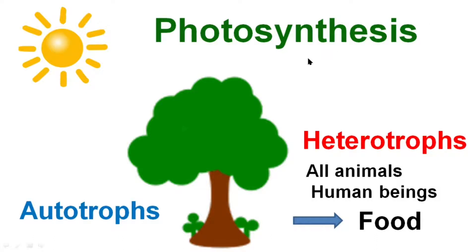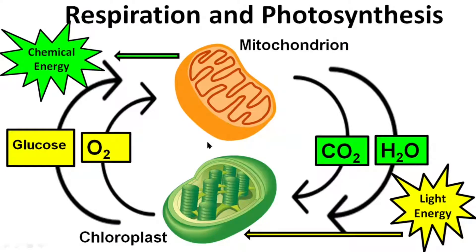Now let's see why plants remain autotrophic. In any plant or animal, when there is a requirement of energy, there is oxidation of respiratory substrates, especially glucose. Glucose is the most preferred respiratory substrate. Glucose contains energy in its covalent bonds, and that energy is released when it undergoes oxidation. For complete oxidation, oxygen is required. In the presence of oxygen, glucose undergoes complete oxidation inside the organelle mitochondrion, resulting in the release of chemical energy in the form of ATP — the energy currency of the cell. The products formed are carbon dioxide and water.